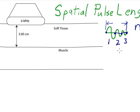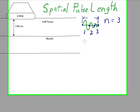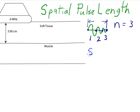The abbreviation for spatial pulse length is SPL. The formula for calculating that is n times the wavelength—the number of wavelengths times the length of each wavelength.